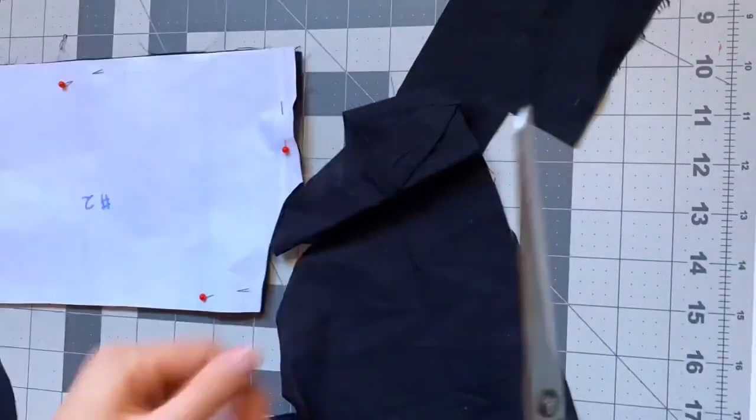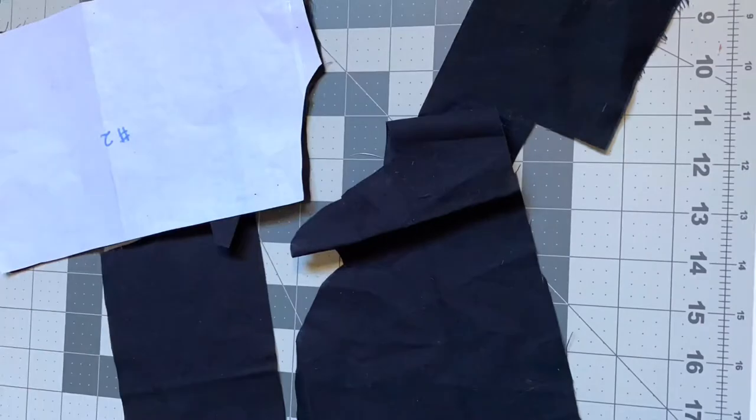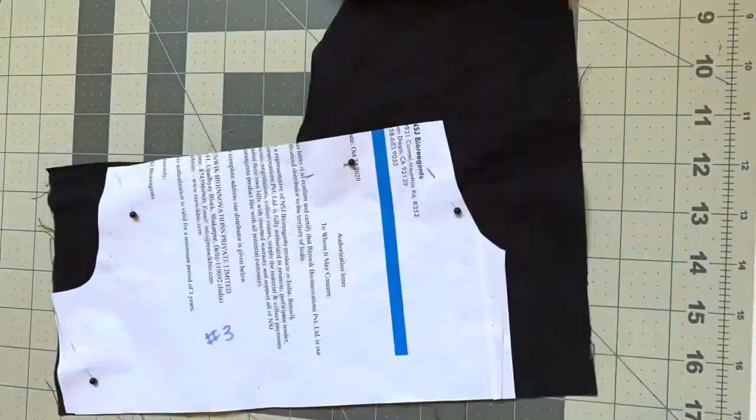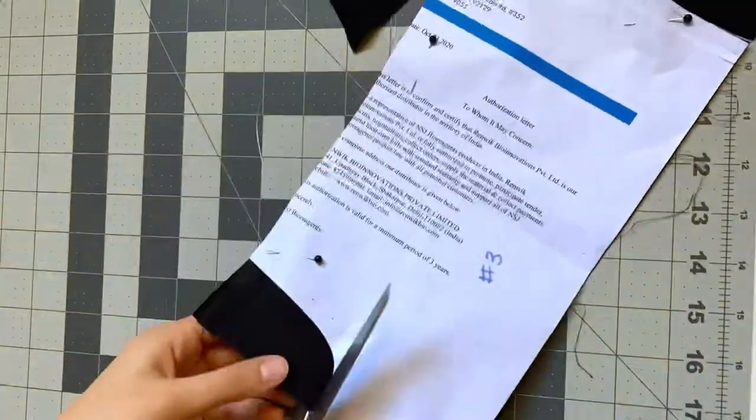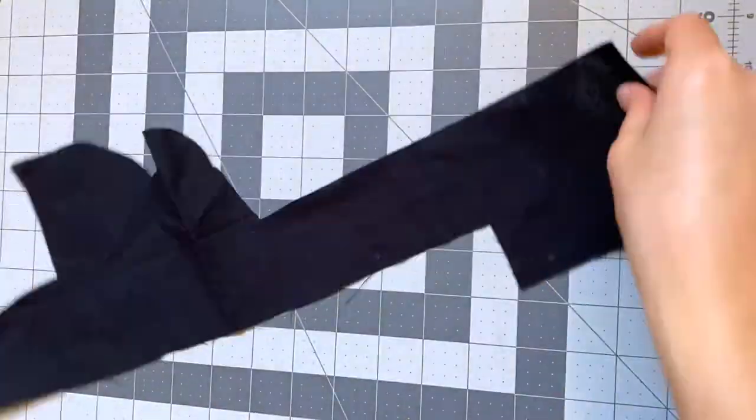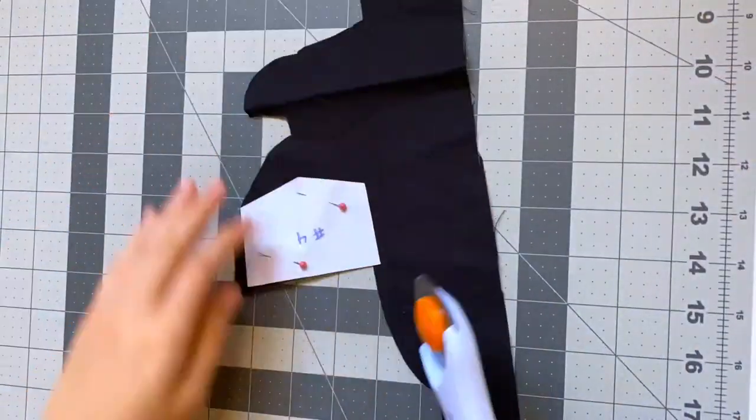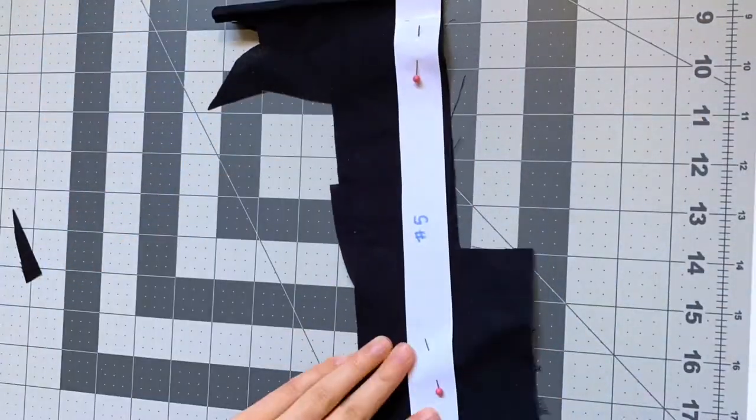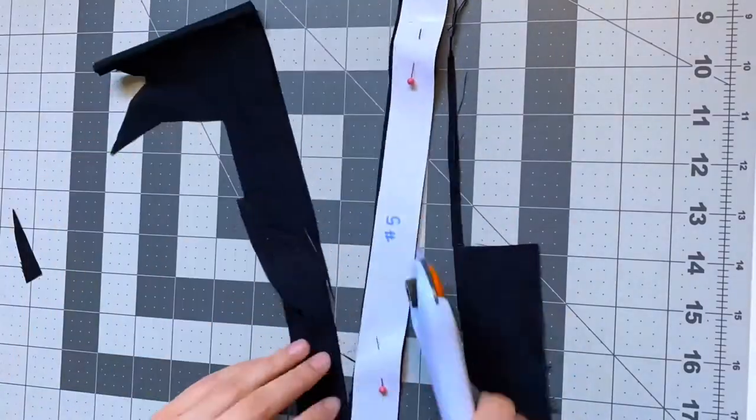You also want these large pieces to be mirror images of each other, so when you fold it in half just make sure that they're good side to good side or bad side to bad side when you're cutting them out. The last thing I'm doing is just cutting out my straps. I will also need two of these and then we can move on to the sewing.